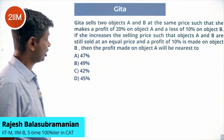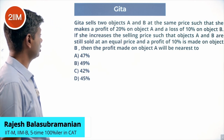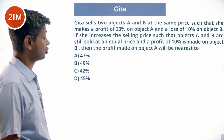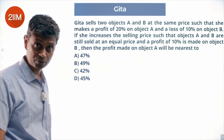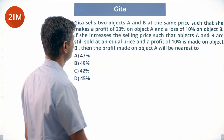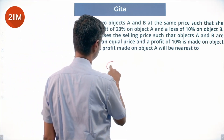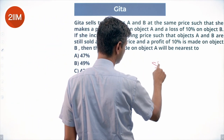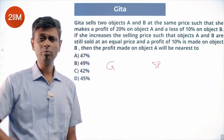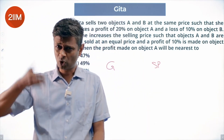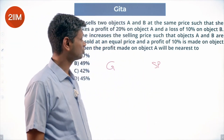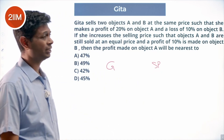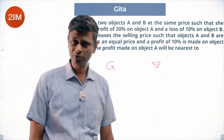Geeta sells two objects A and B at the same price such that she makes a profit of 20% on object A and a loss of 10% on object B. So Geeta's selling price for 20% profit is 1.2 times the cost price, and a loss of 10% is 0.9 times the cost price.